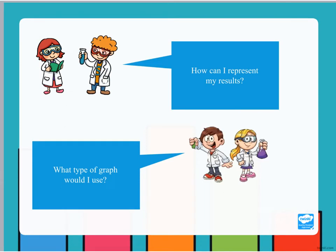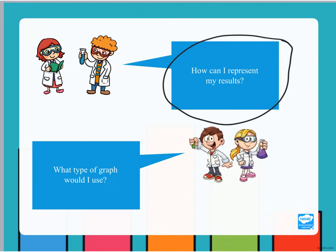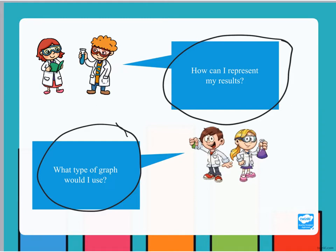The first thing we're going to look at is this question: how can I represent my results? We know that we want to use a graph, and the reason is so that we have a visual representation of our results. The next question is what type of graph would I use? This is a more tricky question because we have different types of graphs. The two graphs we're going to look at are a bar chart and a line graph, and we're going to decide which one we should use to represent our results.